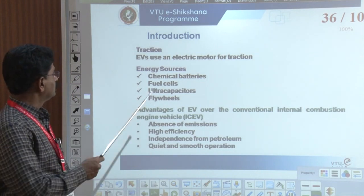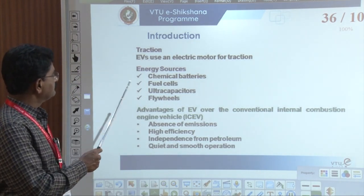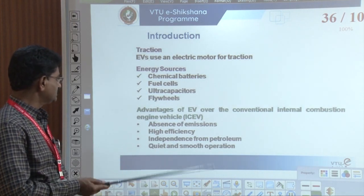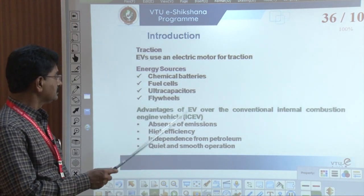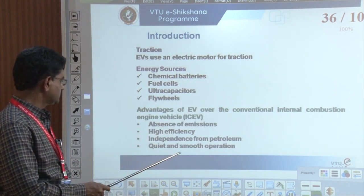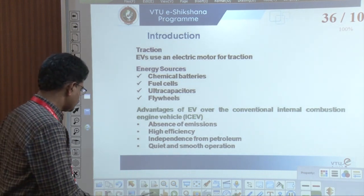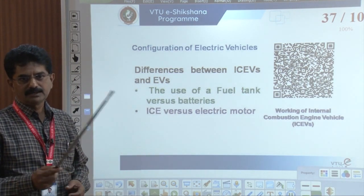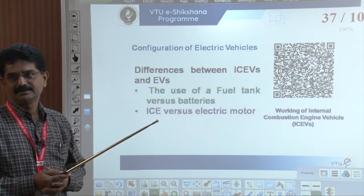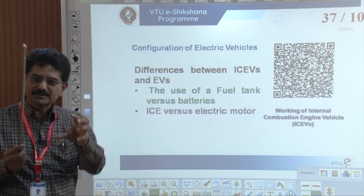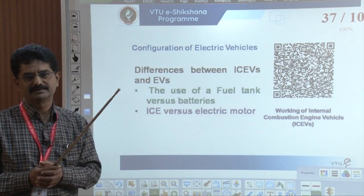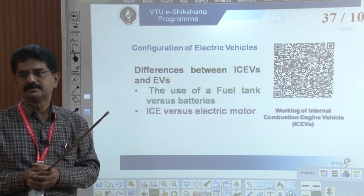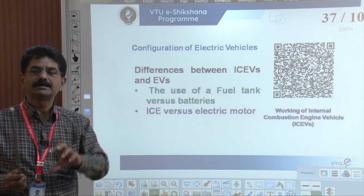In Module 2, we need to discuss traction: electric vehicles use an electric motor for traction. Energy sources include chemical batteries, fuel cells, ultra-capacitors, and flywheels. Advantages of electric vehicles over conventional internal combustion engine vehicles include: absence of emissions, high efficiency, independence from petroleum, and quiet and smooth operation. The key difference is: a combustion vehicle uses a fuel tank, whereas an electric vehicle uses a battery — without either, we cannot imagine the respective vehicle.